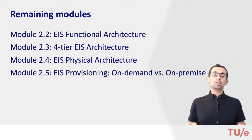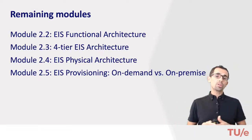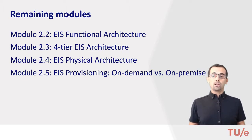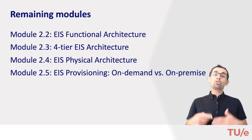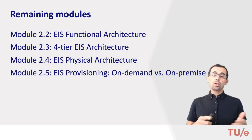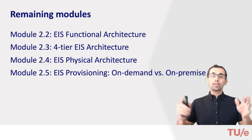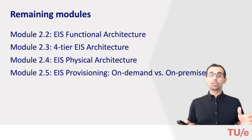In the fourth module, we'll talk about the physical architecture, and we'll see how different physical architecture approaches have changed and evolved over time with advances in technology. In the fifth and final module, we'll see and compare approaches used by enterprise system vendors in providing their systems for use by other companies. We will look into the pros and cons of on-demand provisioning, which is a relatively new approach that makes use of cloud technology.